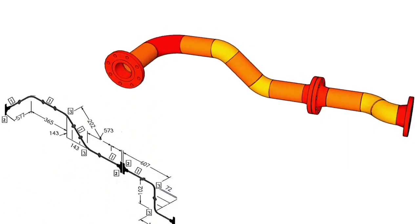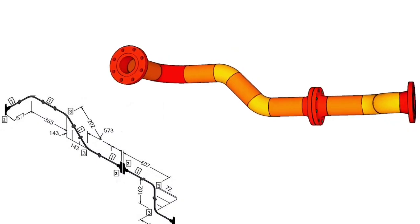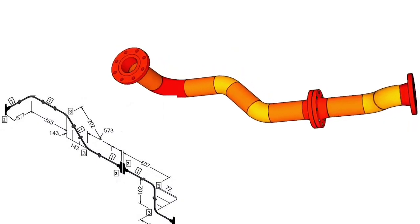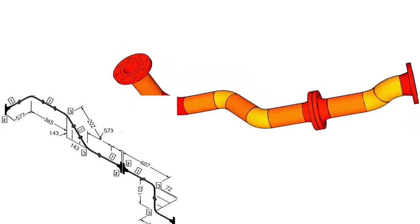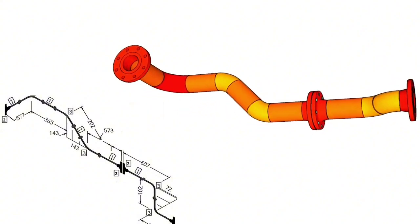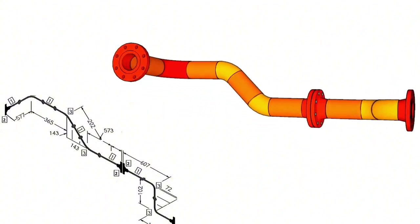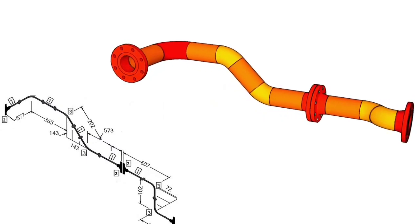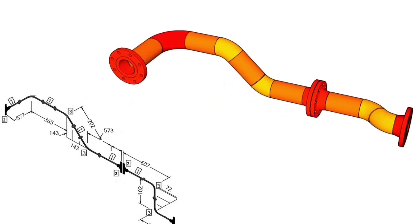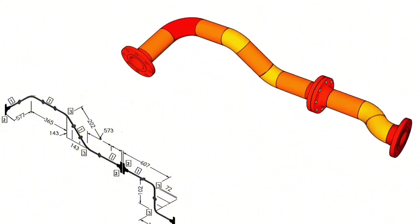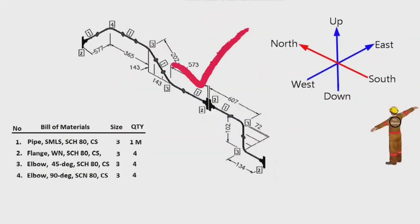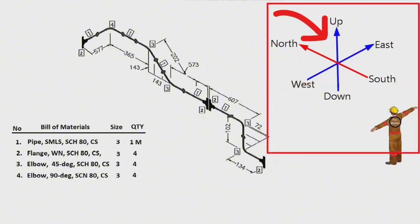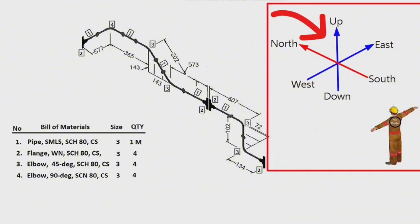We are continuing our tutorial with the next video. In this video, we will learn the isometry of the pipeline bent in different directions and we will watch the 3D model of this pipeline. If you watch the video until the end, I am sure you will improve your pipe training knowledge. Let's start the pipe tutorial video. In this drawing we see the pipe isometric. We will try to read this pipe isometric drawing easily. This scheme shows the directions — there are 6 directions here.